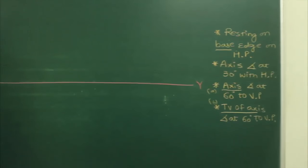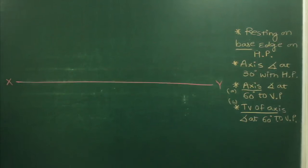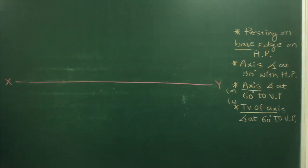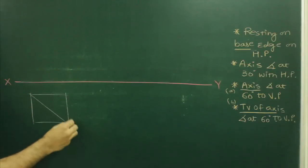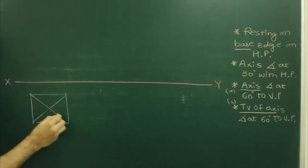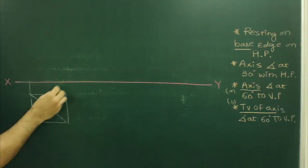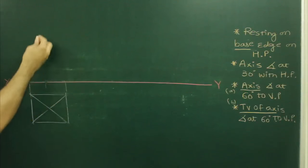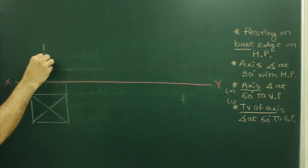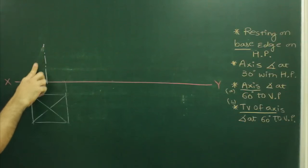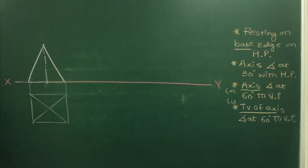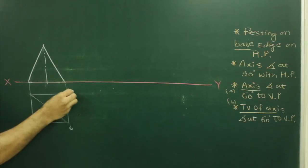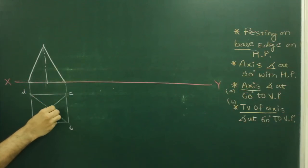We will start with the pyramid resting on its base edge and axis inclined at 30 degrees to HP. First, we draw the axis perpendicular to HP, then draw the square in top view with the resting edge on the right-hand side. Points are labeled A, B, C, D, O, and M.